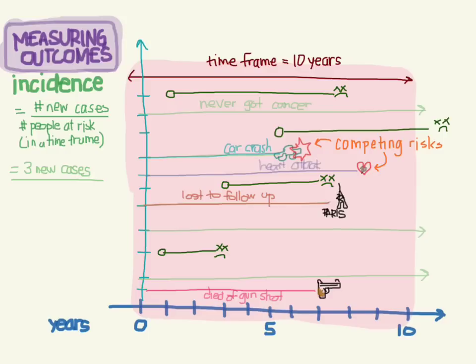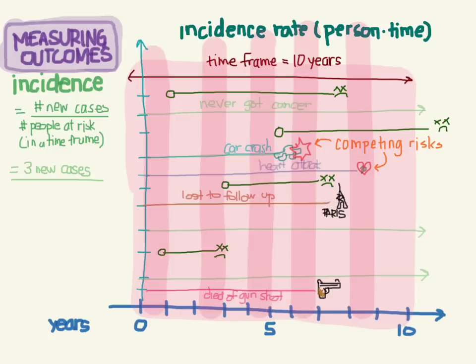This is where something called incidence rate comes into play, also called person-time. What this does is it allows us to chop this up into pieces such that we can count the portion of time that this person was at risk while excluding the portion where they were gone and no longer at risk. I've made these bigger pink stripes and each one represents a year. So now we've broken up each one of these timelines into separate areas that we can count - how many years is each person at risk? That's where we get the term person-time, each person-year.